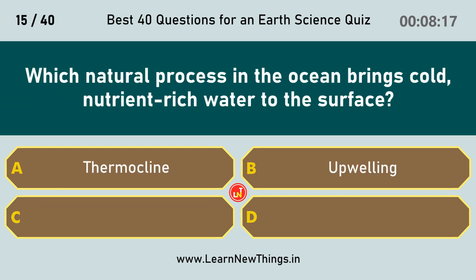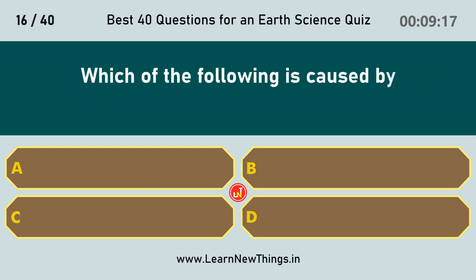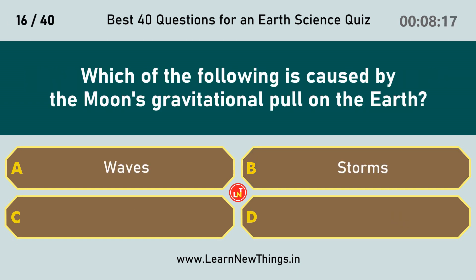Which natural process in the ocean brings cold, nutrient-rich water to the surface? Upwelling. Which of the following is caused by the moon's gravitational pull on the Earth? Tides.